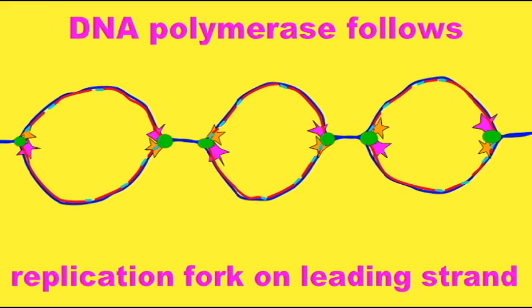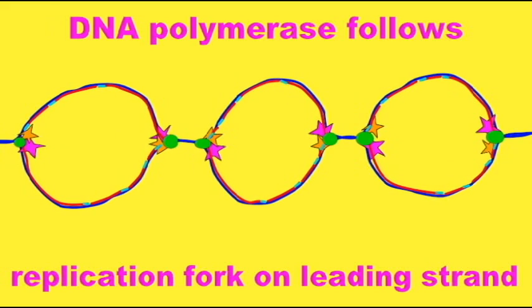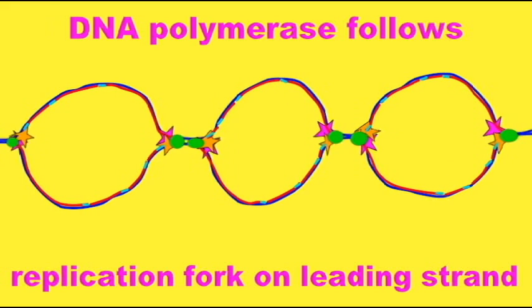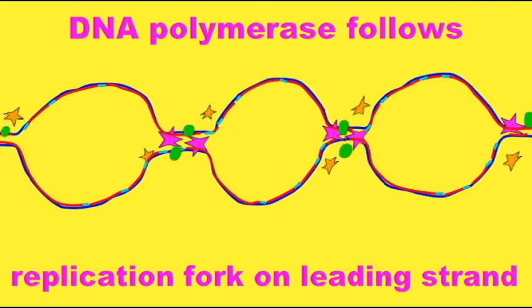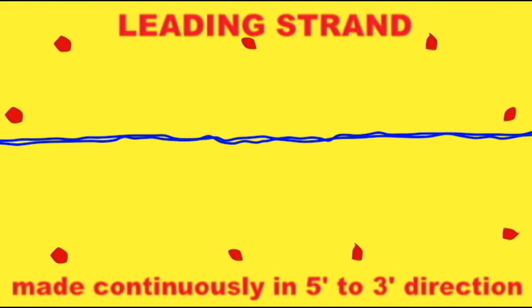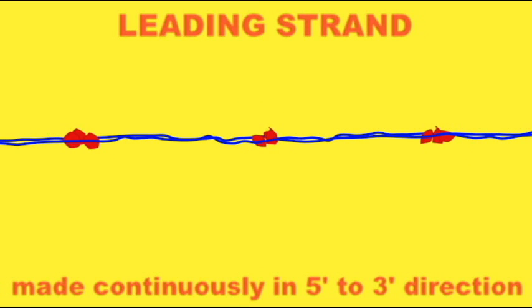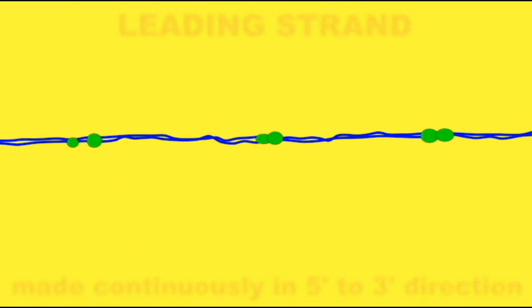So the further that helicase unzips in the 5' to 3' direction, then DNA polymerase can simply follow it inserting new nucleotides in the 5' to 3' direction. So when we see a replication bubble,